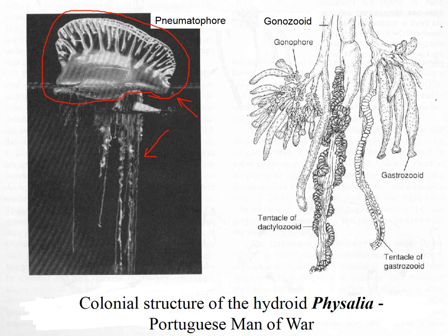A pneumatophore is a type of individual. Other types of individuals that exist within this colony are specialized zooids. A zooid is a single individual animal, and they are specialized for different tasks.